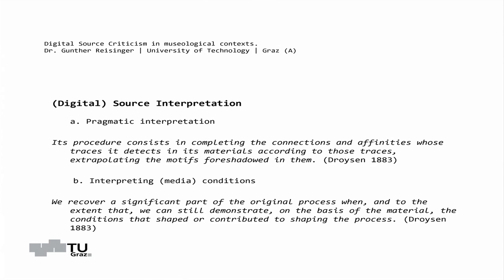According to this, the second phase of source analysis includes the level of content. First, the mentioned pragmatic interpretation: this means the quality of the traditional source often suffers from the disparity between event and research or from the material decay of the source.